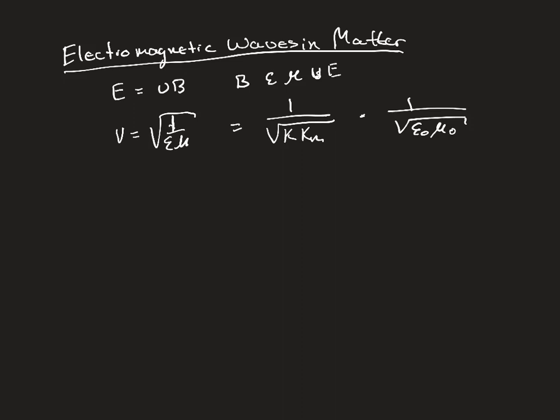Then substitute in for C, the speed of light, which remember equaled one over the square root of the electric constant times the magnetic constant. So I've just substituted C for this relationship here.